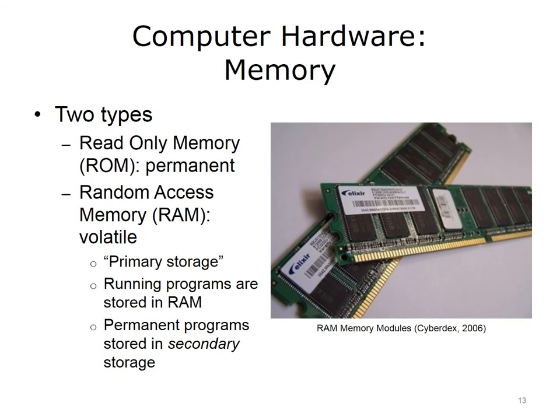Another part of computer hardware is the computer's memory. There are two types. The first is called read-only memory, which is abbreviated as ROM. Read-only memory is permanent, or non-volatile memory. Anything that is stored in ROM will be there, whether the computer is on or off. ROM stores system-level programs that have to be available at all times. For example, the computer's Basic Input-Output System, or BIOS, is held in ROM. To learn more about the computer's BIOS, see the unit titled Computer Software.